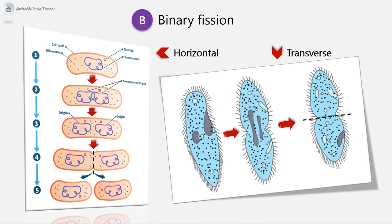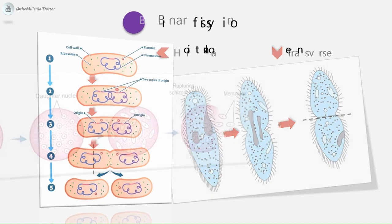Binary fission is a method of asexual reproduction by which a single parasite divides either longitudinally or transversely into two equal parasites. Mitotic division of the nucleus is followed by division of the cytoplasm. In amoeba, division occurs along any plane; in flagellates, division is along the longitudinal axis; and in ciliates, it is in the transverse plane.